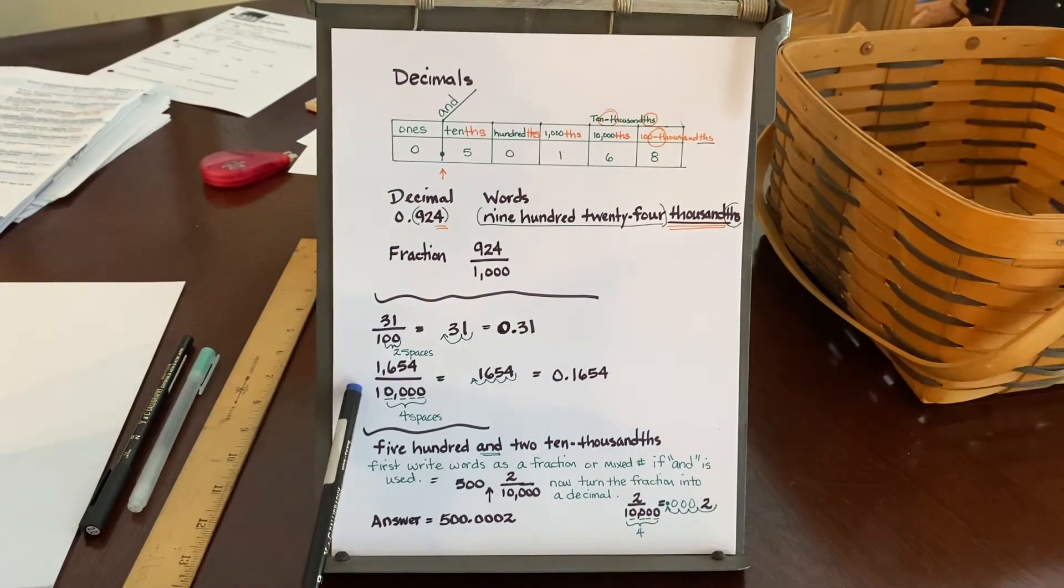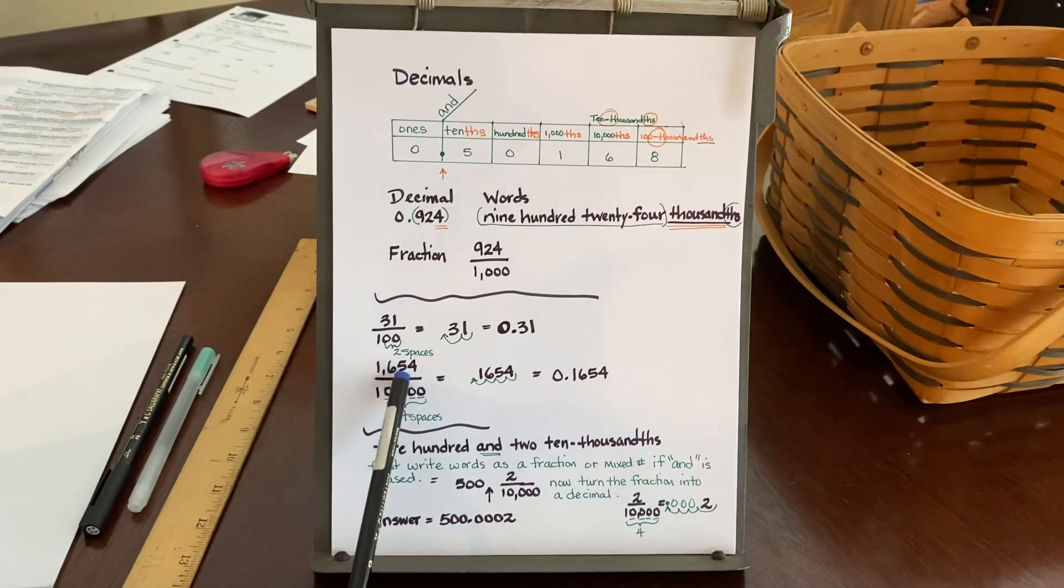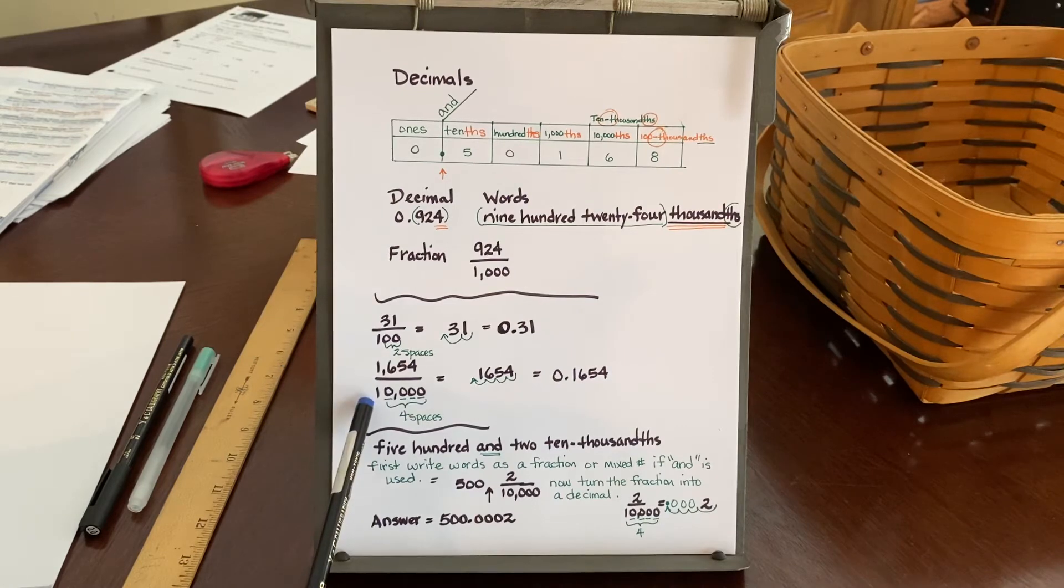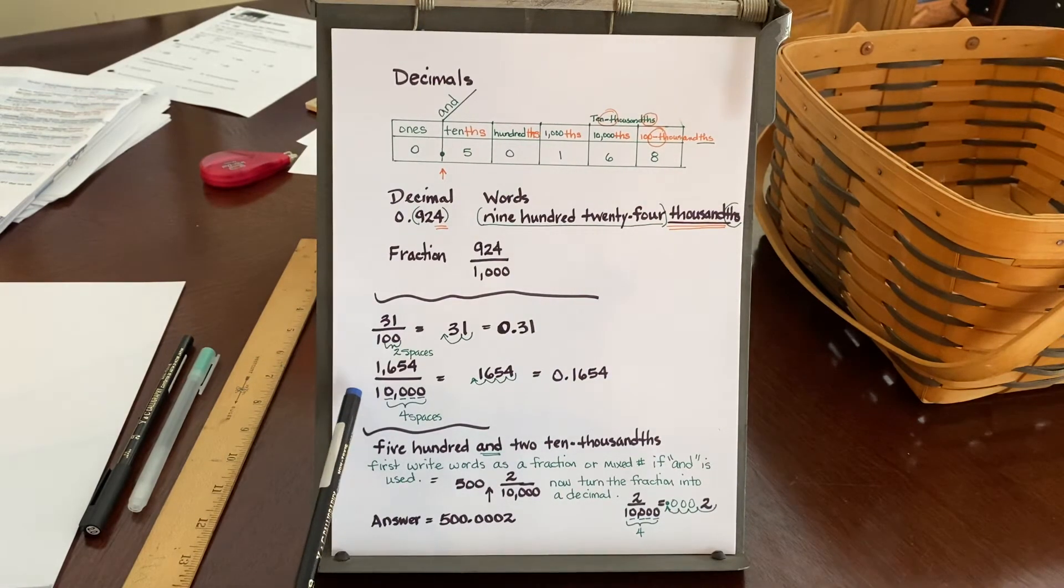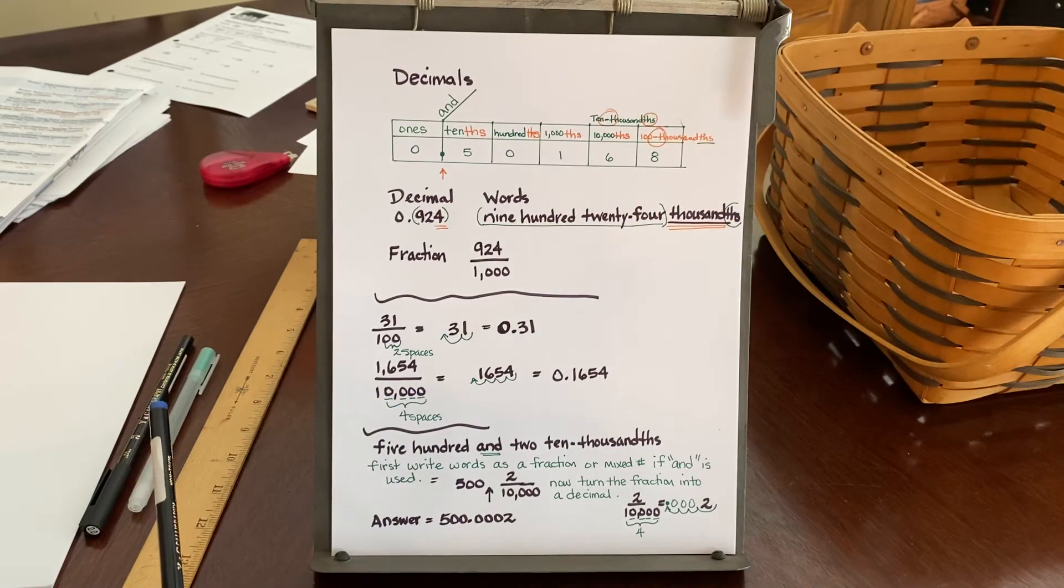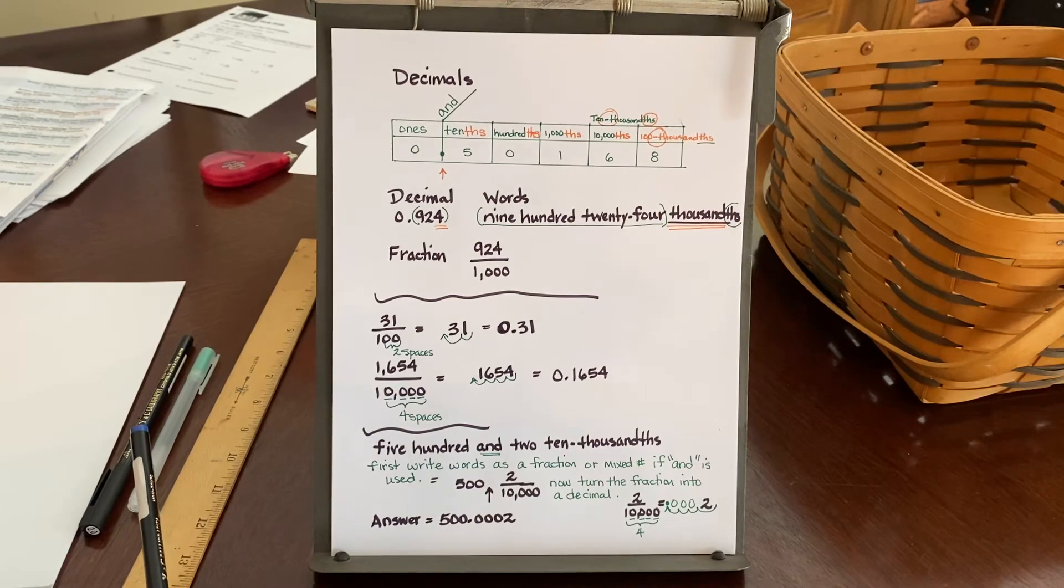Now, here's another large fraction, or it seems large. It's 1,654 in the numerator. And in the denominator, I have the number 10,000. Well, the number 10,000, I want you to immediately think how many zeros are involved. There are four zeros involved. That's telling me how many decimal places I am going to have to mark off.